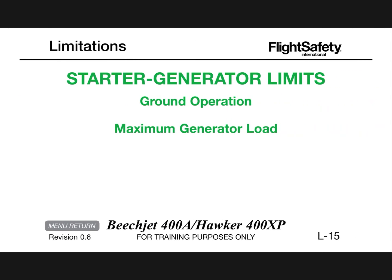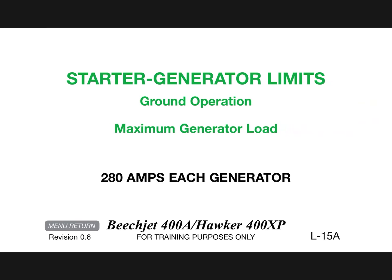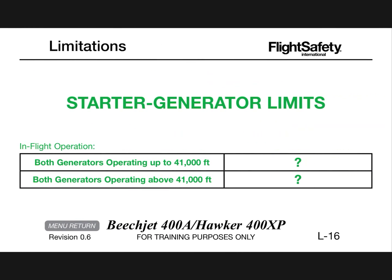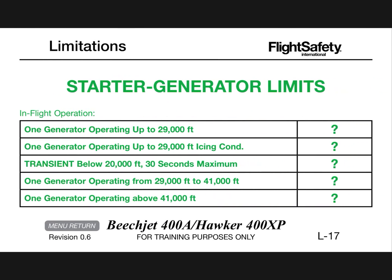Generator starter limits — ground operation: maximum generator load 280 amps each. Both generators operating up to 41,000 feet 280 amps each. Both generators operating above 41,000 feet is 260 amps each.